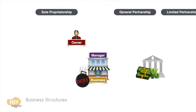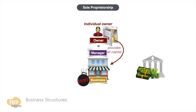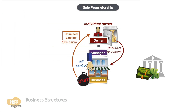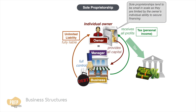The simplest structure is the sole proprietorship, where an individual owns and operates the business. The owner personally funds the capital needed for the business and retains full control over the operations of the business, so the owner is fully liable for the actions and debts of the business, which is termed as unlimited liability. The owner also retains all profits, which are taxed as personal income. Sole proprietorships tend to be small in scale as they are limited by the owner's individual ability to secure financing.